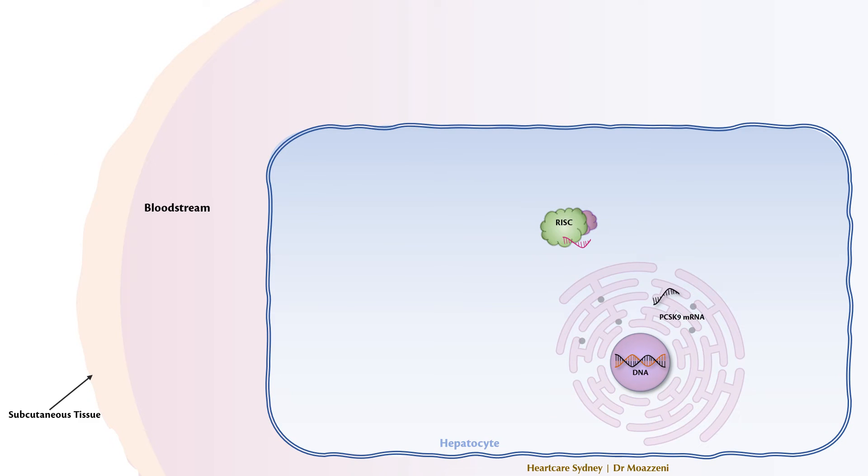Now, the activated RISC complex locates and binds to the PCSK9 messenger RNA, leading to its destruction. By eliminating PCSK9 messenger RNA, we effectively stop the production of PCSK9 protein. This increases LDL receptors on the liver surface and a subsequent reduction in LDL cholesterol levels.